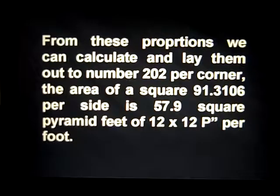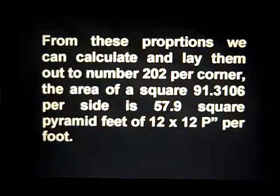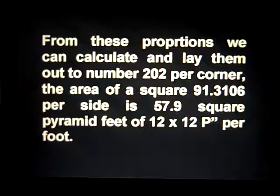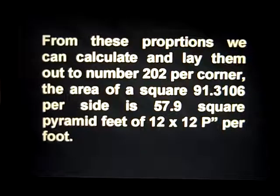From these proportions we can calculate and lay them out to number 202 per corner. The area of 91.31060 inches per side, multiplied by itself, equals 57.9 square pyramid feet.